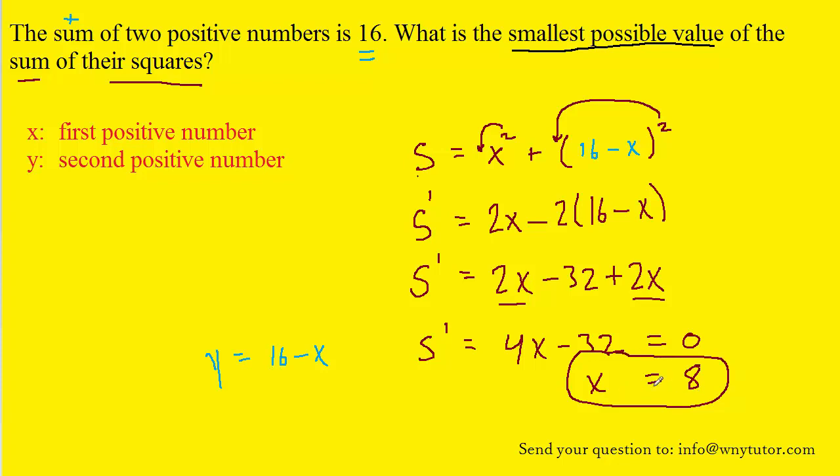Now we have to make sure that this value of x does indeed minimize our objective equation. To do that, we could look at the first derivative test. In that test, we will plot our critical value, x equals 8, at the center of a number line. We'll take a value of x that's less than 8, perhaps 7, and also a value that's greater than 8, perhaps 9, and we'll plug them into the first derivative.